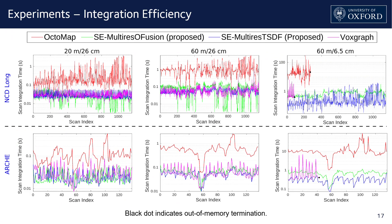In terms of system efficiency, we present the time spent on integrating each scan in both NCD-Long and Archie experiments. Because we focus on long-range high-resolution reconstruction, we emphasize the rightmost column in this table, i.e., 60-meter scan range and 6.5-centimeter voxel resolution. In both experiments, Octomap terminated early due to memory limit, and so did VoxGraph in NCD-Long. Overall, Octomap is the slowest among all evaluated methods. With coarse resolution, VoxGraph has similar performance to Super8. However, at 6.5-centimeter resolution, MultiRes-TSDF is faster than VoxGraph, while MultiRes-OFusion is on a par with VoxGraph.